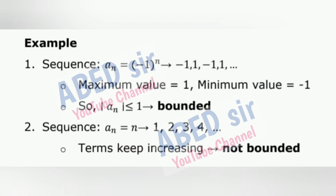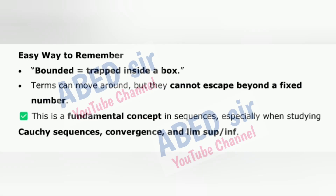Example: The sequence aₙ = sin(n) has maximum value = 1 and minimum value = −1, so |aₙ| ≤ 1 — bounded. The sequence aₙ = n gives terms 1, 2, 3, 4, … which keep increasing — not bounded. Easy way to remember: Bounded = trapped inside a box. Terms can move around, but they cannot escape beyond a fixed number. This is a fundamental concept in sequences, especially when studying Cauchy sequences, convergence, and lim sup/inf.